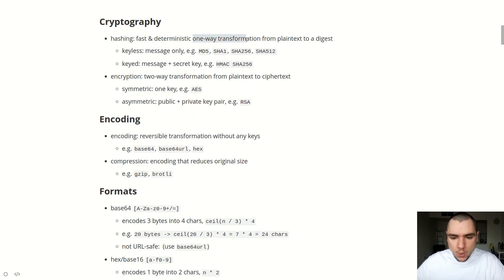Hashing is a one-way transformation from plain text to a digest. Hash functions are really fast and they're also deterministic — that is to say that for any given input, the function is always going to produce the same exact result. A digest is basically a random-looking string that you get as the output of running your plain text through this function.